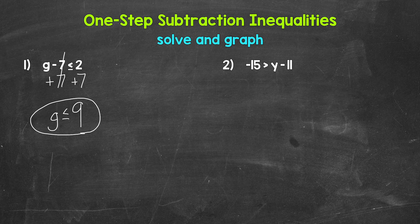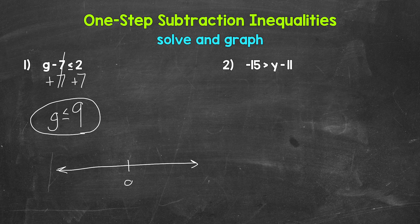So any value less than or equal to nine is a solution of this inequality — it will make the inequality true. Now we need to graph this inequality, all of the solutions. We need to represent all of the values less than or equal to nine. So let's start with a number line, and we'll put nine right here in the middle, with a couple of numbers on both sides: seven, eight, nine, ten, eleven.